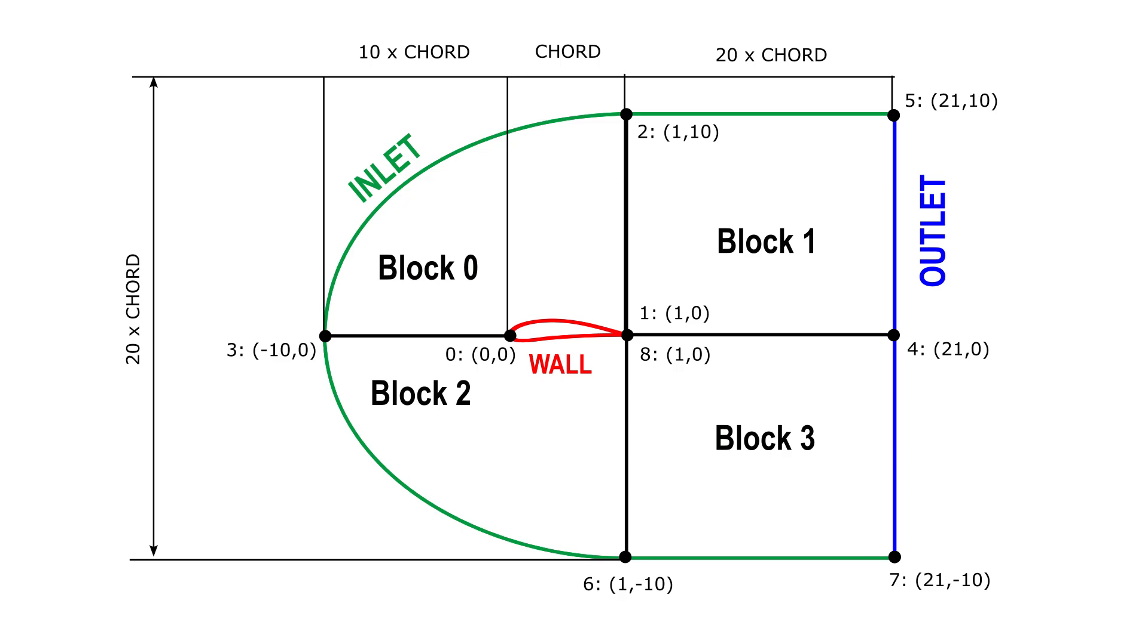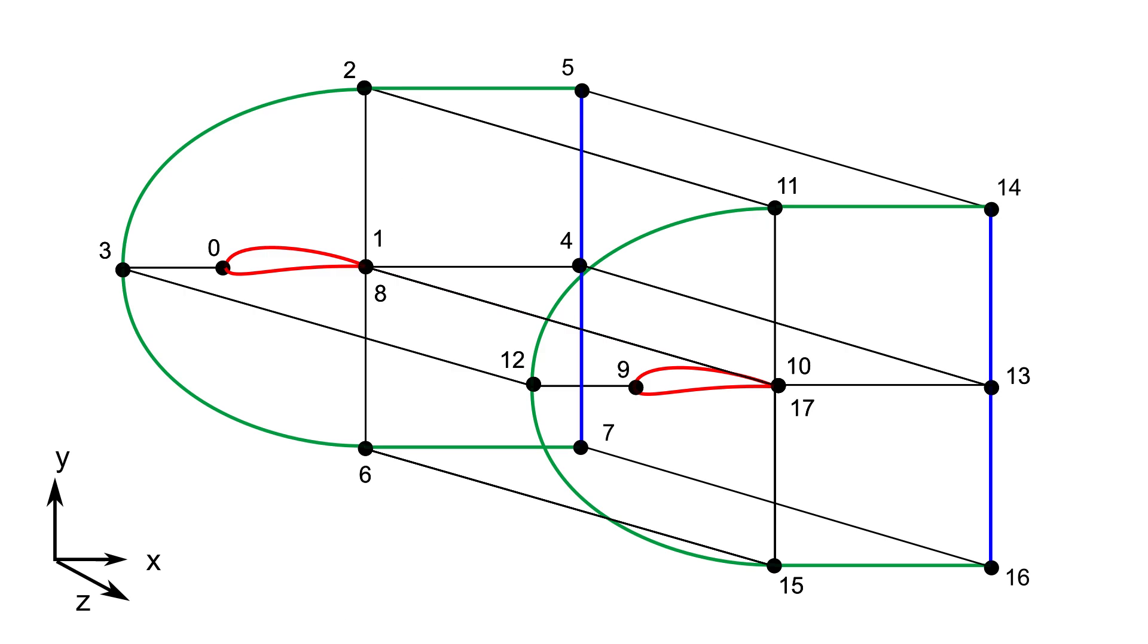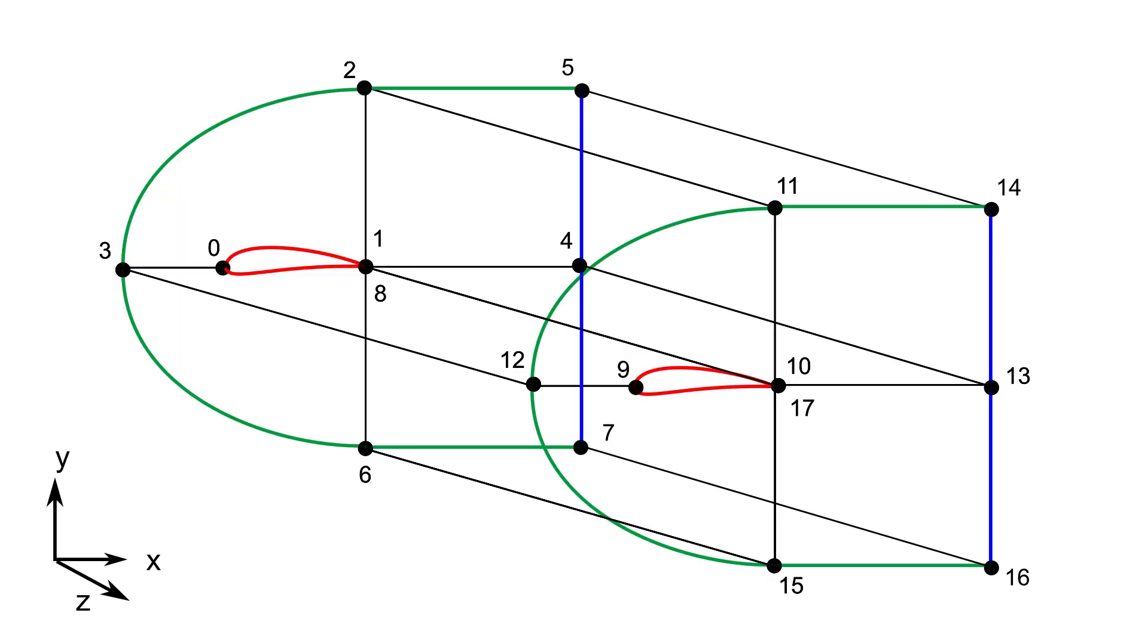Then write down the coordinates of the vertices, this time adding z equals zero to each point. Even though our case is two-dimensional, OpenFOAM requires the vertices to be defined in 3D space. Enter them into the blockMeshDict file in the same order as shown here. Next, to create the 3D blocks, extrude the 2D block by duplicating the eight vertices and change the z value from zero to, for example, 0.3. This gives the domain a small thickness in the z direction which allows OpenFOAM to generate the 3D mesh.